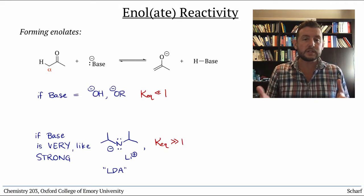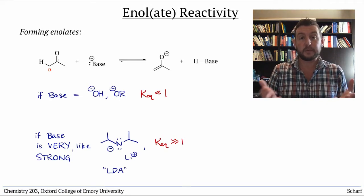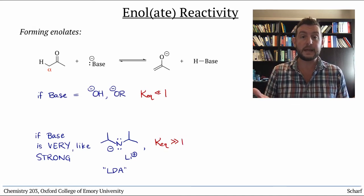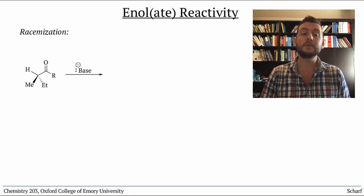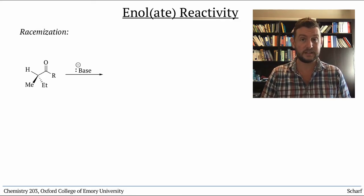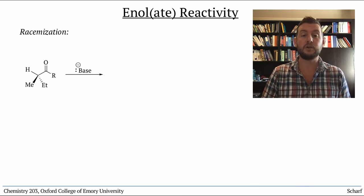One of the implications of enolate formation, whether we do it with a strong or weak base, is that enolizable carbonyl compounds, whose alpha carbons are stereocenters, tend to racemize over time.